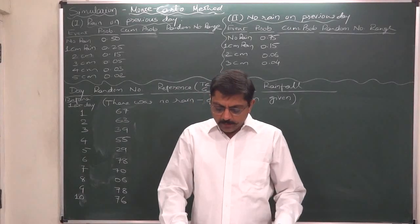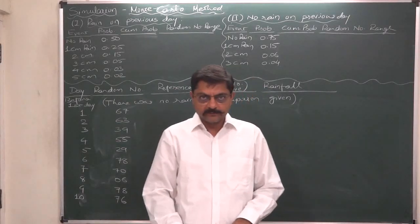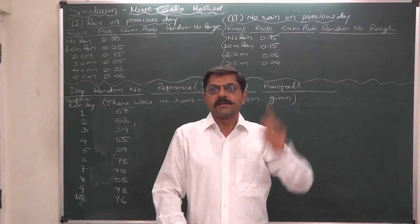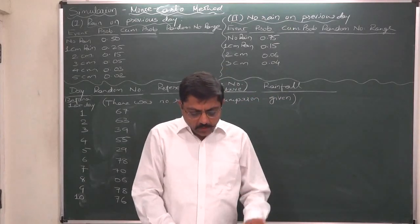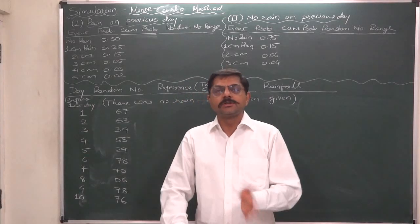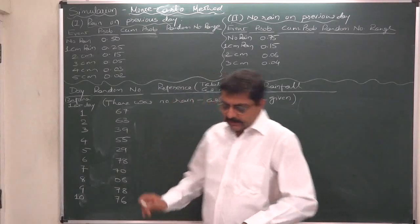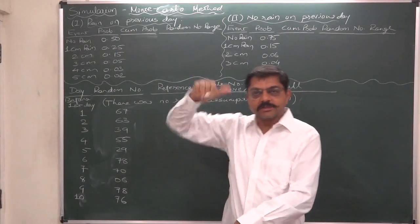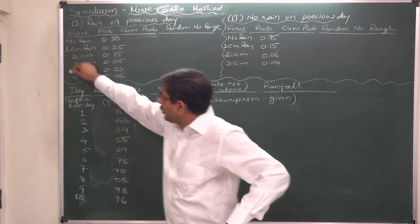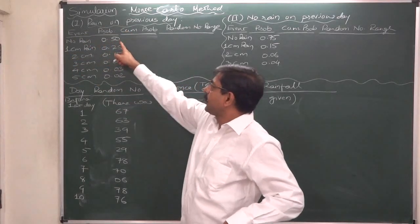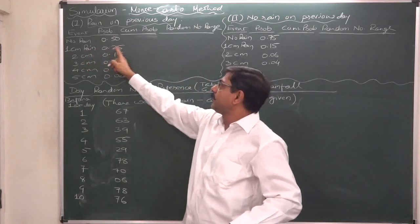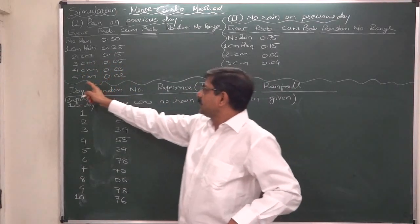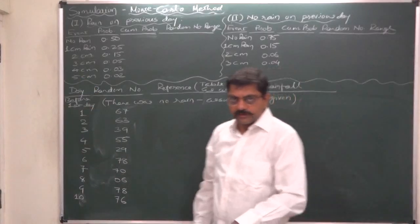The occurrence of rain in a city on a day is dependent upon whether it rained on the previous day. If it rained on the previous day, the probability distribution of rain is: no rain — 0.5 (50%), 1 centimeter — 0.25, 2 centimeters — 0.15, 3 centimeters — 0.05, 4 centimeters — 0.03, and 5 centimeters — 0.02.